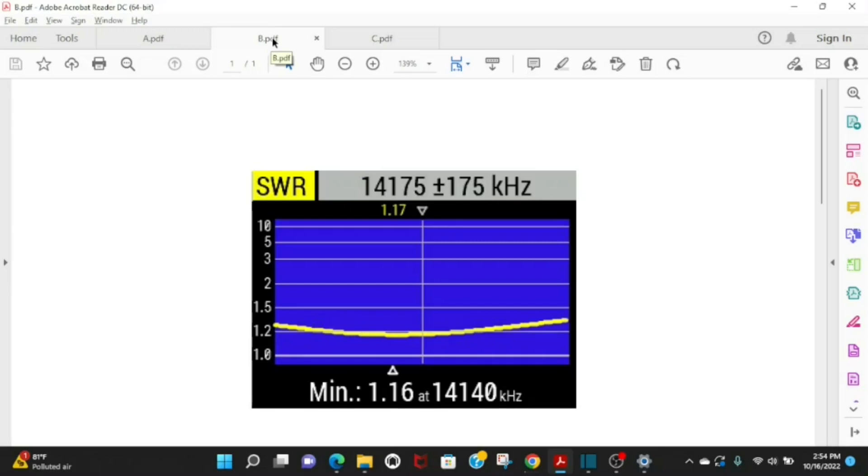Here you can see it's getting close to center right now - about 1.3 on the bottom of the band, maybe 1.3 and a half on the top of the band, and our minimum is now about 14.135 kilohertz, below the center of the 20 meter band.